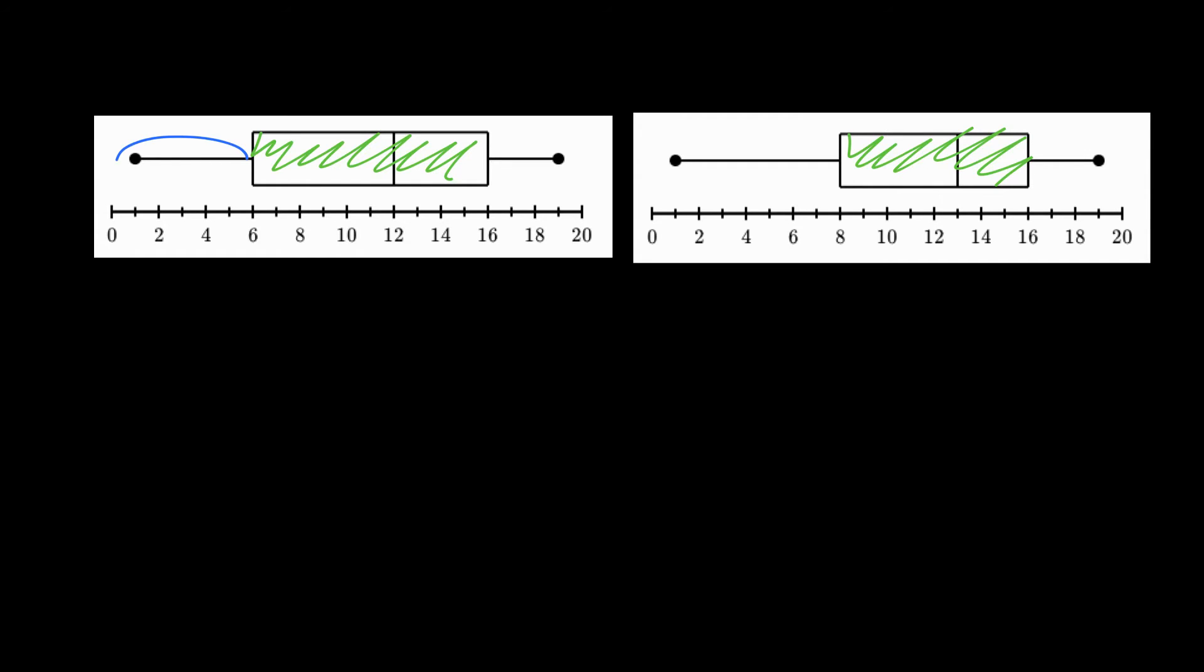These little outside parts, the whiskers, represent the outer quartiles. The box is the interquartile. So it's just the range from the highest part of the box to the lowest part of the box.